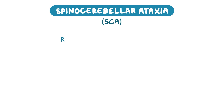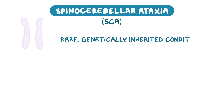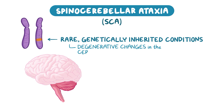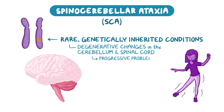Spinocerebellar Ataxia, or SCA, refers to a group of rare, genetically inherited conditions caused by mutations in several types of SCA genes. These mutations result in degenerative changes in the cerebellum and often in the spinal cord, which causes progressive problems with coordination and balance, known as ataxia.